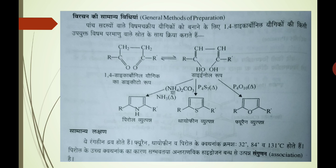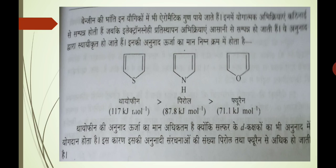Ye rangeen dravya hote hain. Furan, thiophene aur pyrrole ke jo boiling points hain — inke jo kvathnaank hain — vo kramashah 32 degree centigrade, 84 degree aur 131 degree centigrade hote hain. Sabse highest boiling point pyrrole ka hai, iska kaaran yeh hai ki possibly ismein intramolecular hydrogen bonding upasthit hoti hai jiske kaaran association ho jaata hai. Jab hum pyrrole ko padheinge to usmein hum ise detail mein dekhenge ki is prakar se intramolecular hydrogen bonding ho jaati hai.